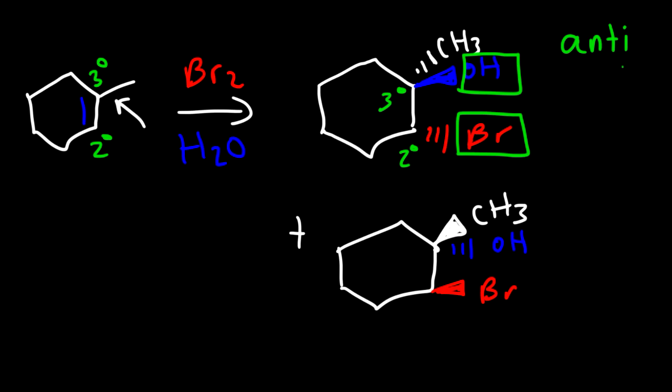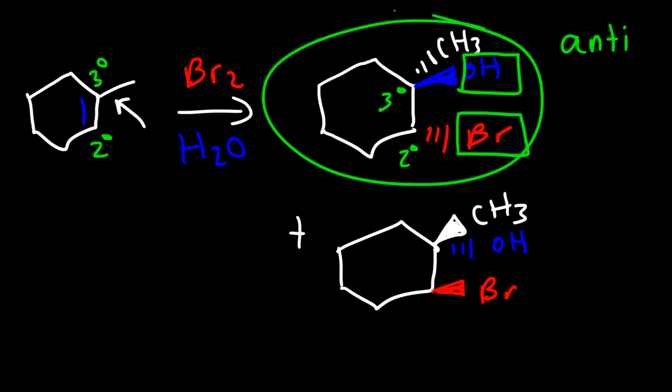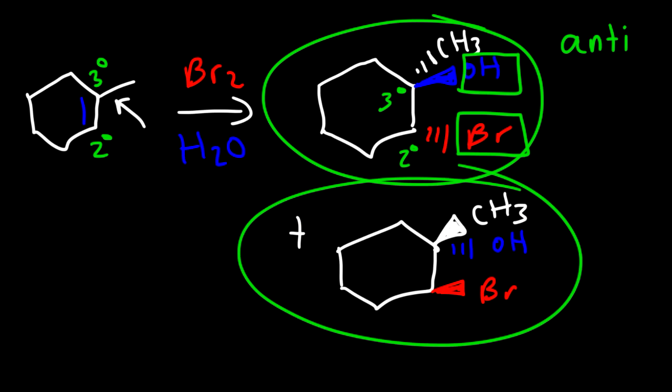That's it for this video. Now you understand the mechanism behind the halogenation of alkenes and the halohydrin formation. This is the halohydrin product, and this one as well.